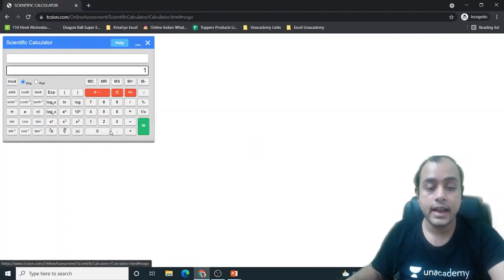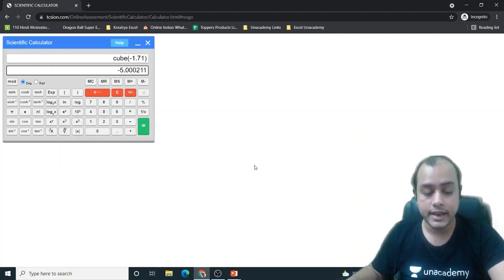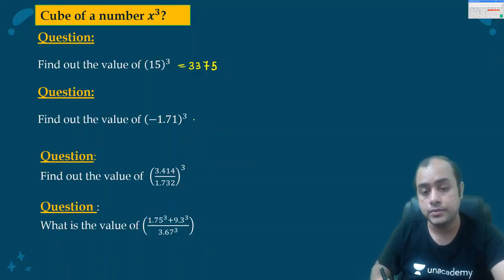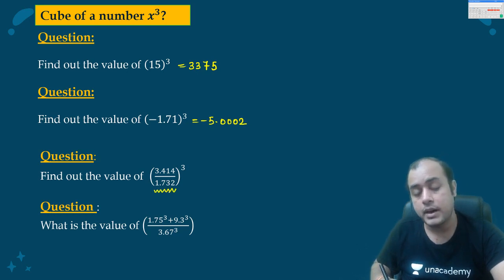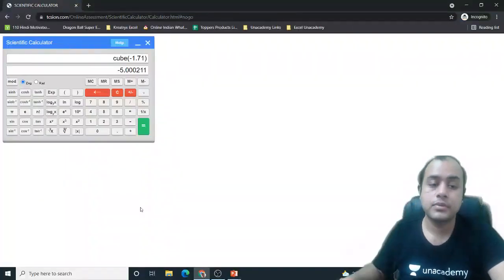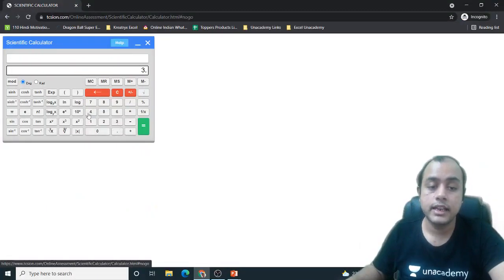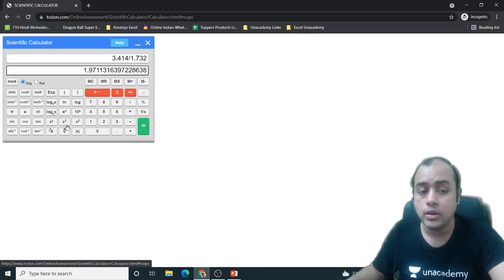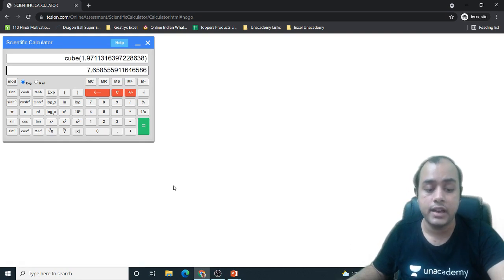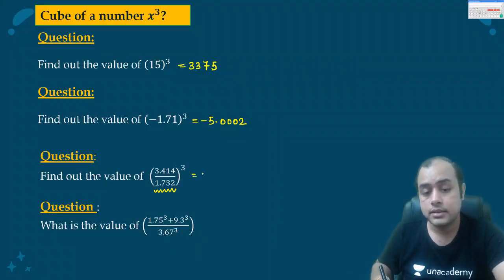Minus 1.71 cube. So clear it, enter 1.71 plus minus, then take cube, minus 5.0002. Then 3.414 by 1.732 cube. Press equal to and then only press cube, 7.6585.